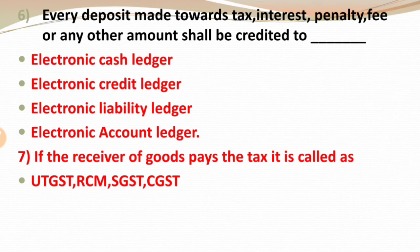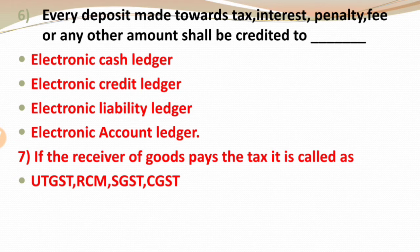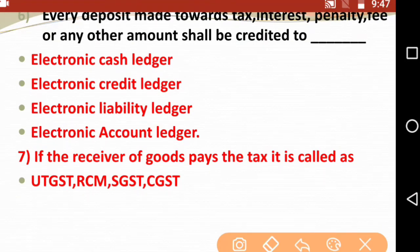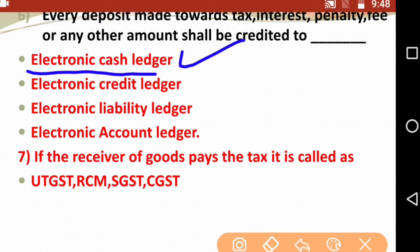Question six: Every deposit made towards tax, interest, penalty, fee, or any other amount shall be credited to — electronic cash ledger, electronic credit ledger, electronic liability ledger, or electronic account ledger? Remember, all payments including CGST, SGST, and UTGST — fees, tax, interest, and penalty — everything is recorded in the electronic cash ledger.